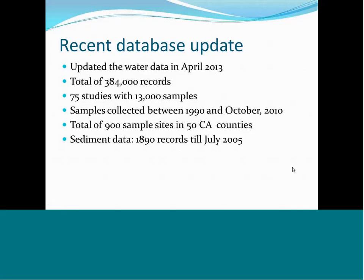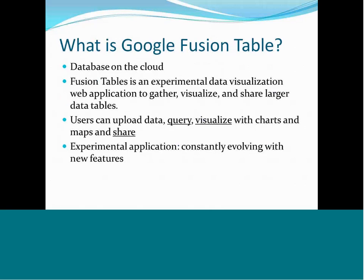Keith has updated the database recently with an addition of 39,000 records. The database now has a total of 384,000 records from 75 different studies. There are 13,000 samples collected between the year 1990 and October of 2010. The database now covers about 900 sample sites located in 50 counties of California, and the newly added records were all water column data, so the sediment data table stays the same. We have about 1,800 records from samples collected up to July 2005.